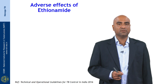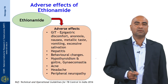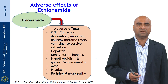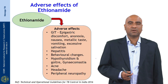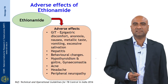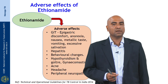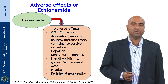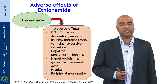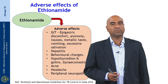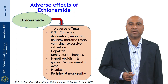Coming to ethionamide: like all TB drugs, its main adverse effects are gastrointestinal — epigastric discomfort, anorexia, vomiting, metallic taste, and excessive salivation. We should also be careful about hepatitis, so LFT monitoring is required. Behavioral changes, hypothyroidism, goiter, and gynecomastia are endocrinological manifestations of ethionamide. Some patients can develop acne, and CNS manifestations like headache and peripheral neuropathy are also known to occur.